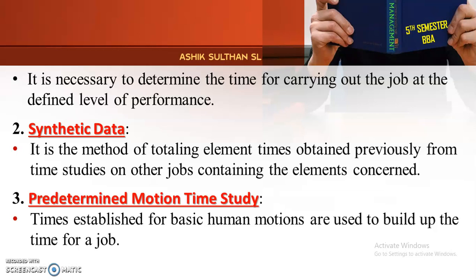The third method is the predetermined motion time study. In this method, times established for basic human motions are used to build up the time for a job. Human motions are analyzed and combined to make up the work of a job. We use basic human motions to build the total job time.